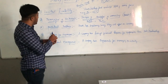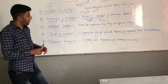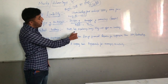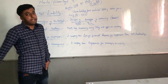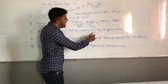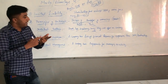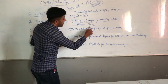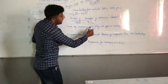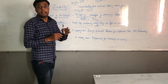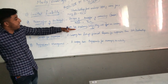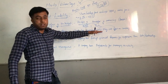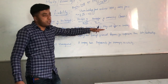Transfer of interest is possible. The next advantage is perpetual existence. In case of death, loss, insolvency, or insanity of a partner, the business does not end. Other partners can continue the business. That is why the members of the company have perpetual existence.